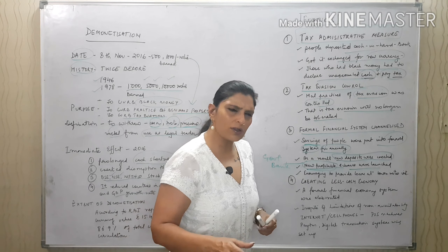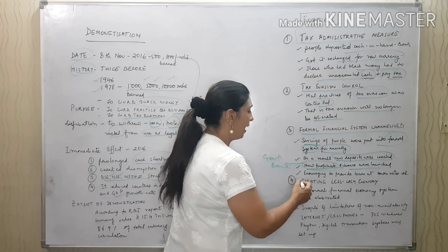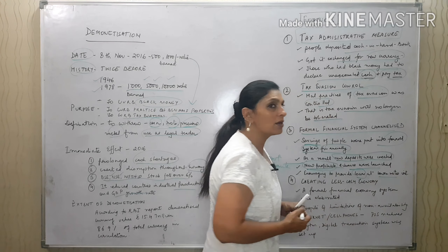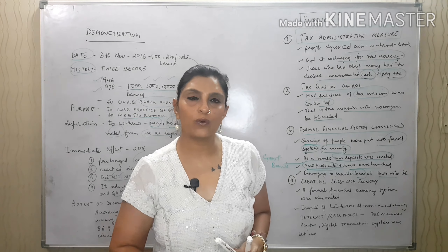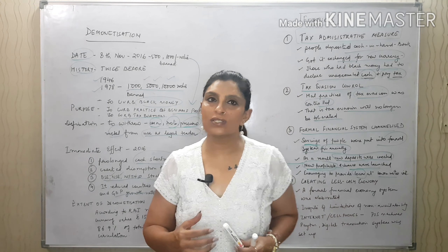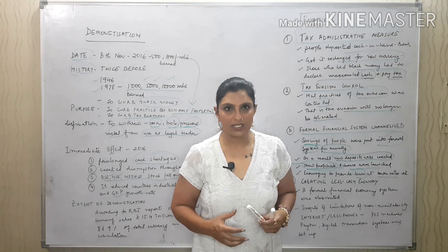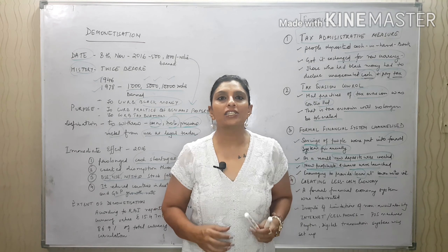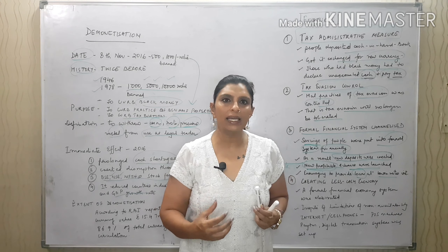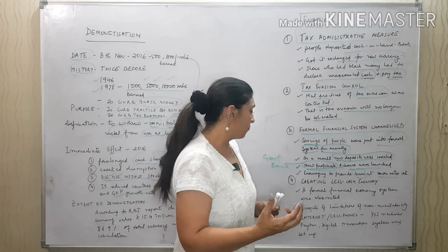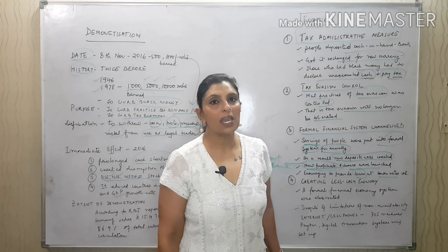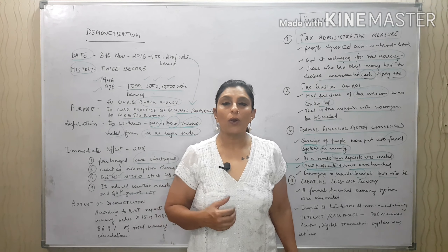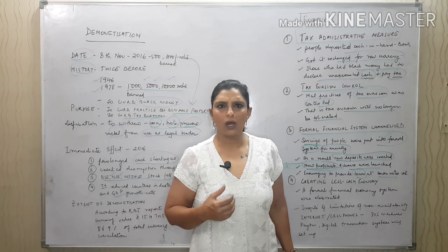Banks offered new schemes: deposit for a certain period and earn a specific rate of interest. Everything was accounted for. Banks were also encouraged to provide loans at lower rates of interest. The idea was that the more deposits banks have, the more loans they can provide at lower interest rates. A formal financial system was immediately initiated.